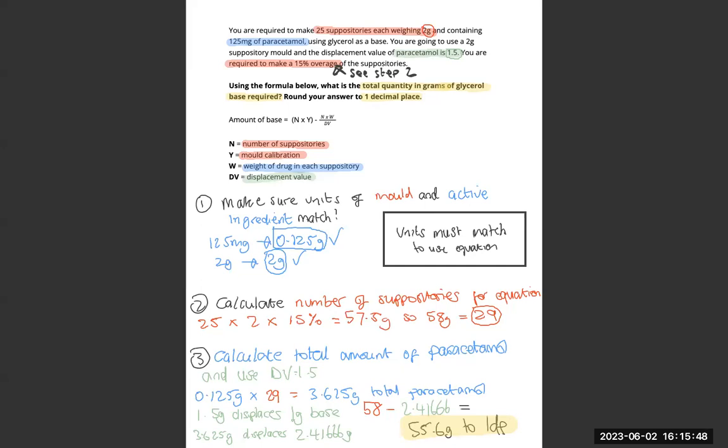We then need to use the total amount of paracetamol. So we know that each suppository contains 125mg, we know we need 29 of them, so we times that together.